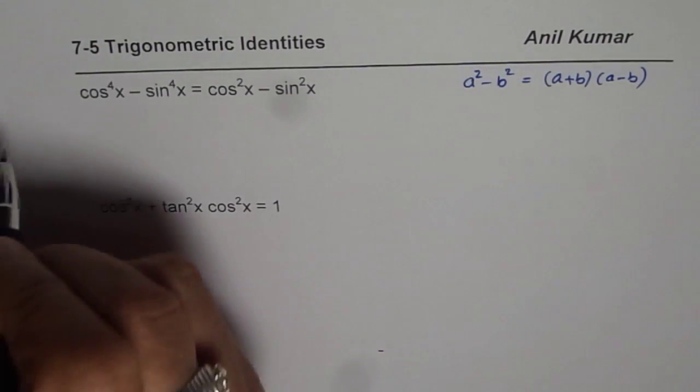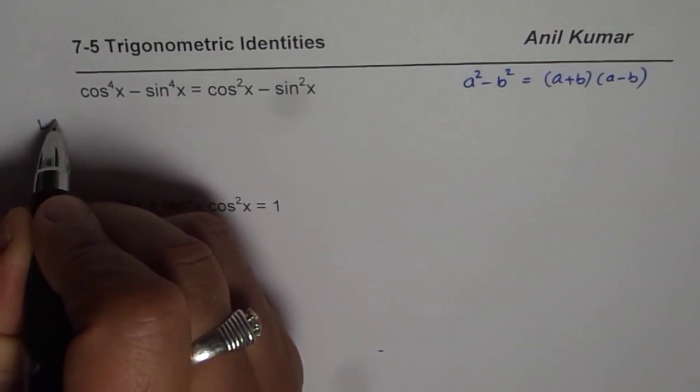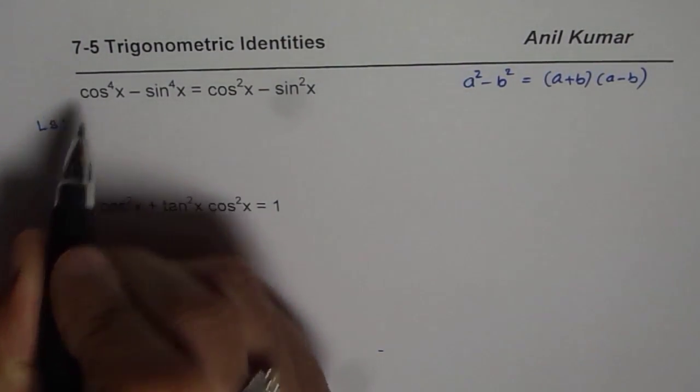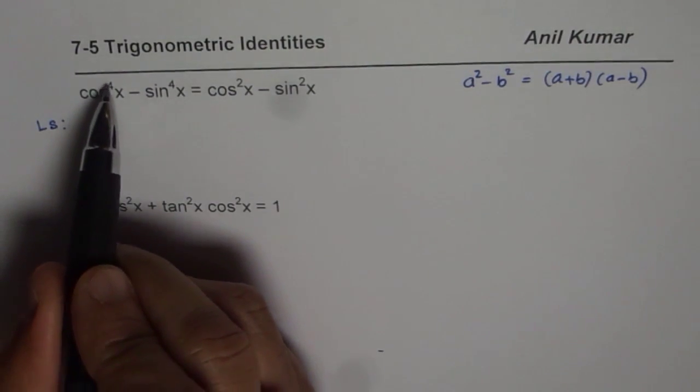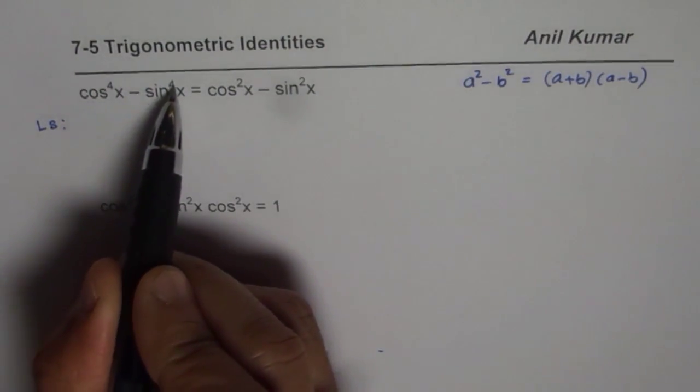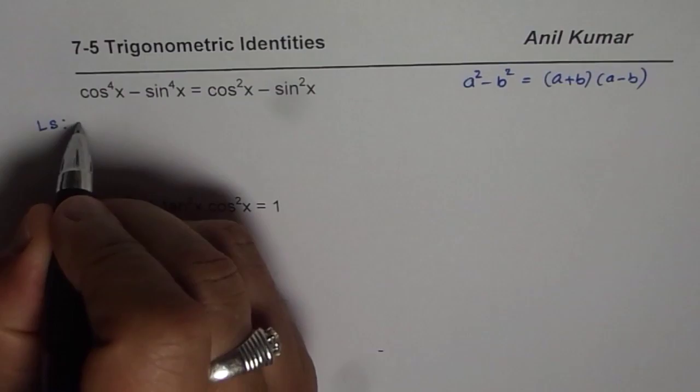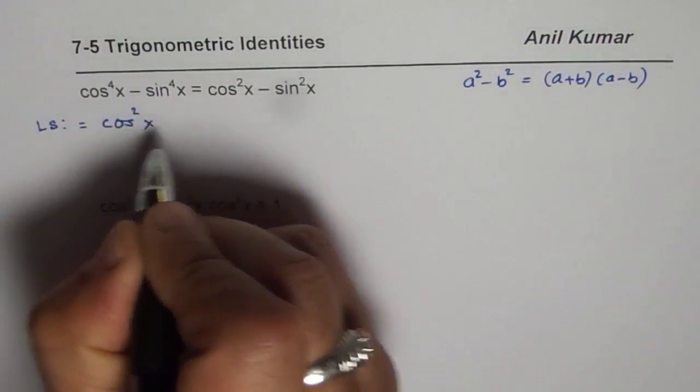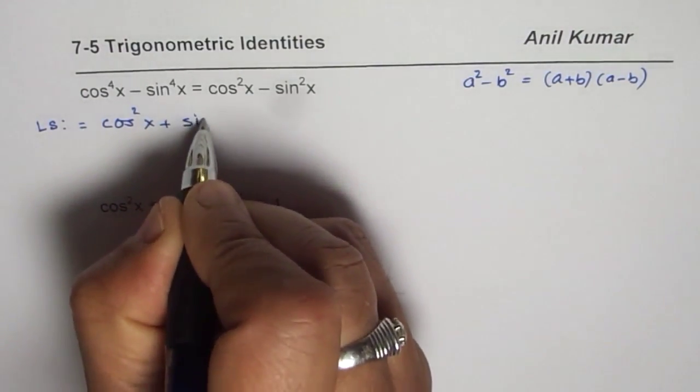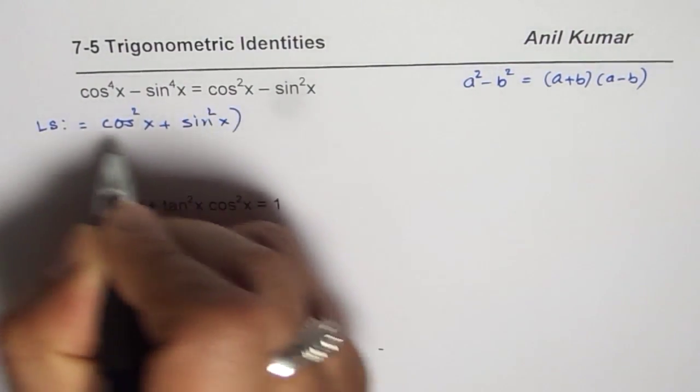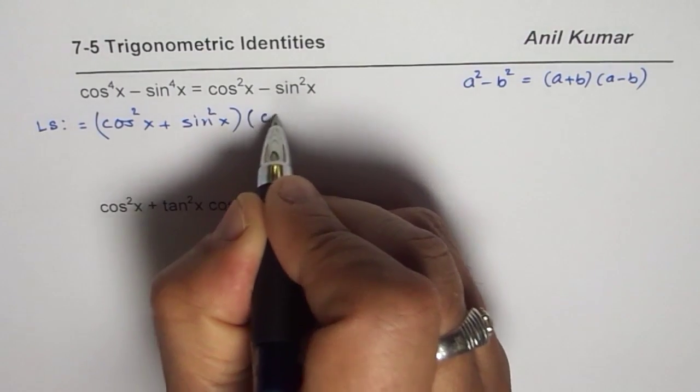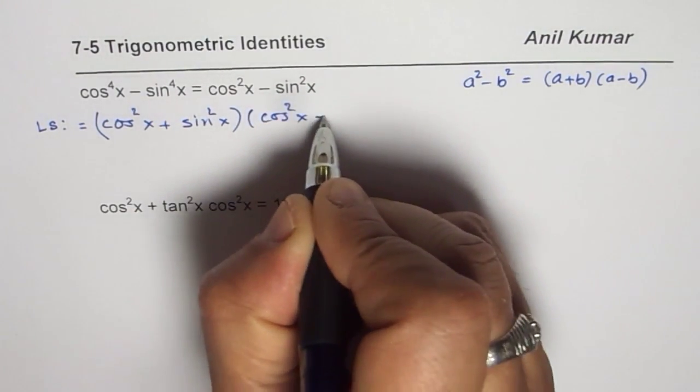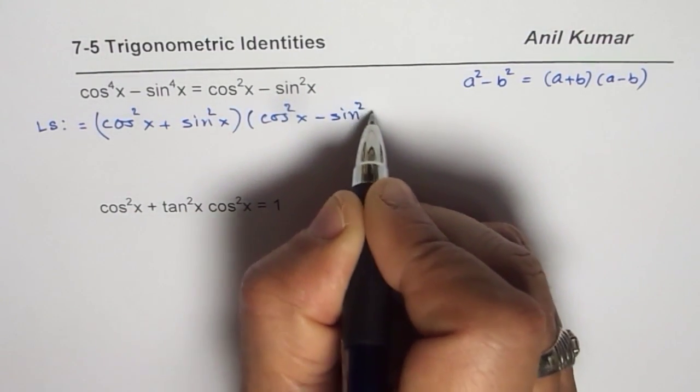Now always proving identity starts from one side. So let's begin with the left side. Left side for us is cos to the power of 4x minus sin to the power of 4x. I can write this left side as applying this formula cos square x plus sin square x times cos square x minus sin square x.